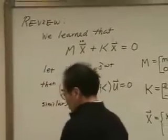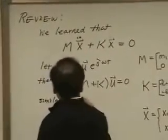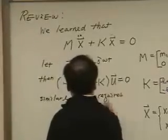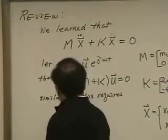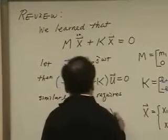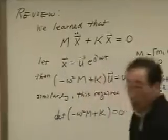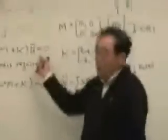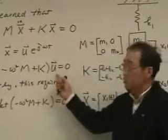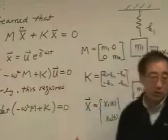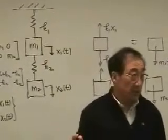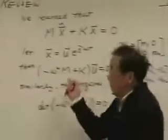Similarly, over here, this equation requires the determinant has to be zero. Because as we see over here, the solution that U vector is zero is a trivial solution. The system is not moving.